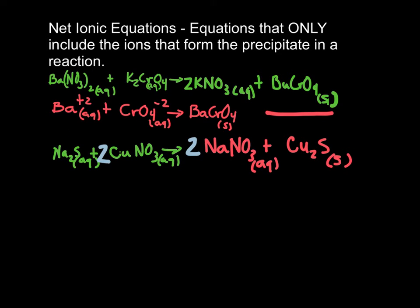Let's take a look at our second example. We had sodium sulfide, an aqueous solution, reacting with an aqueous solution of cuprous nitrate. We produced aqueous sodium nitrate and a precipitate of cuprous sulfide. If we're asked to write the net ionic equation for this, we only include the ions that make the precipitate.